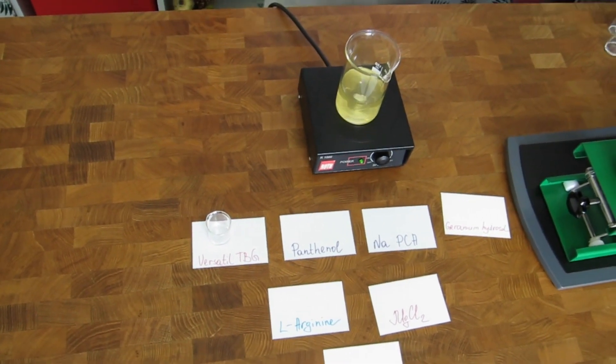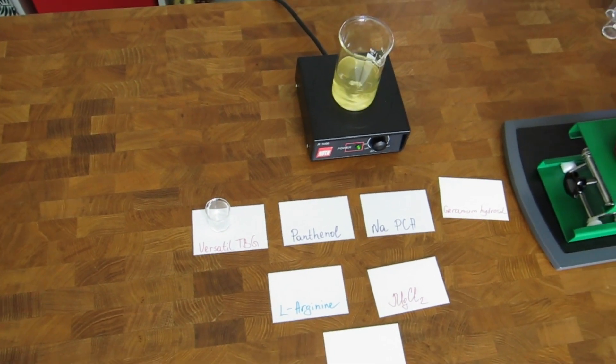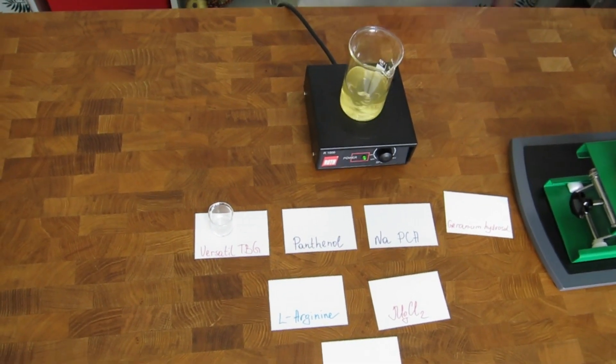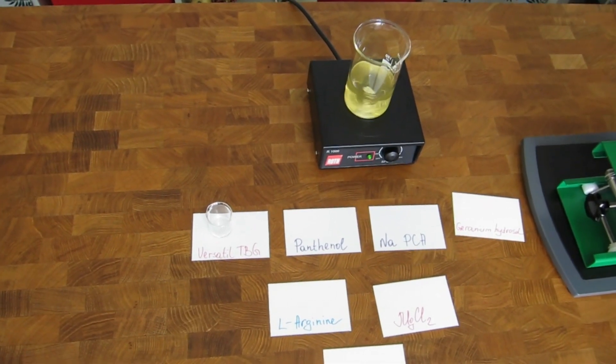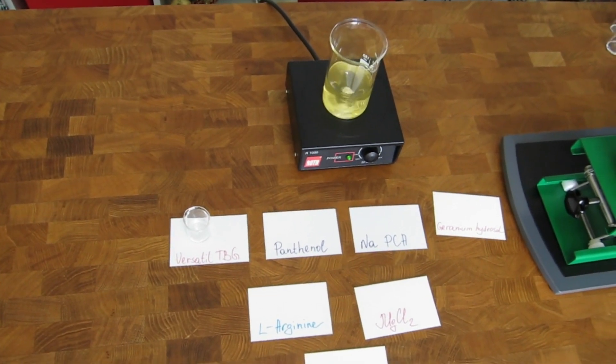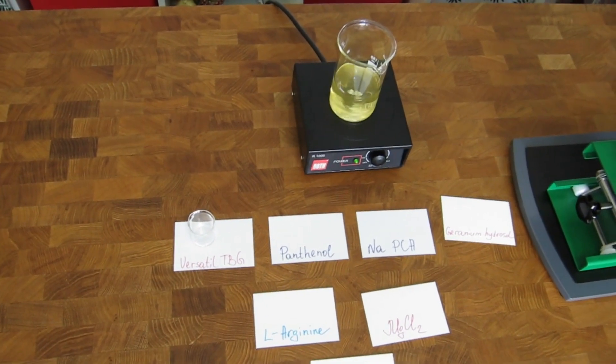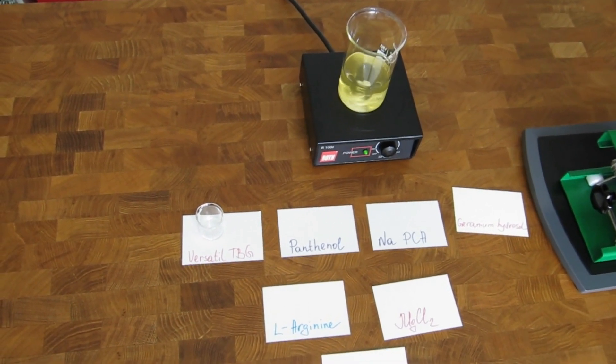We deliberately increase the pH because we know that our preservative system reduces the pH, and this is something you can only figure out by making several batches and experimenting. There is no mathematical formulation for that.